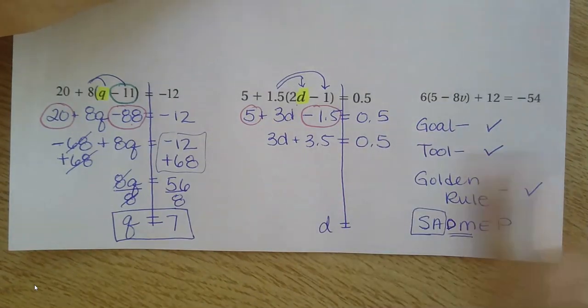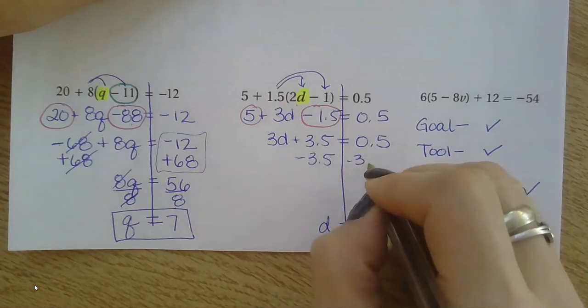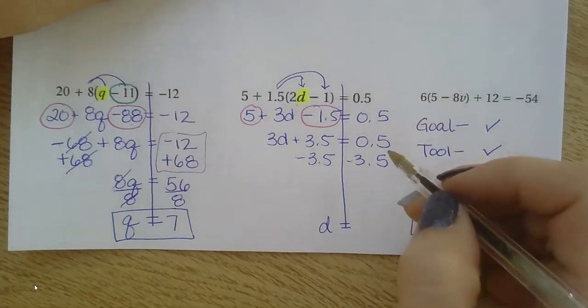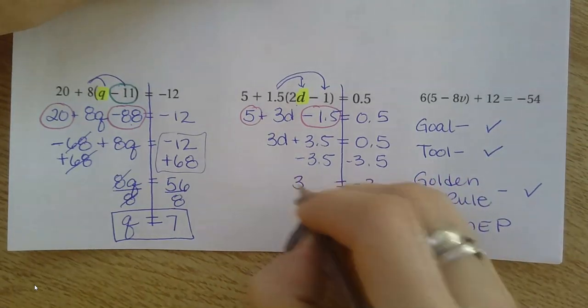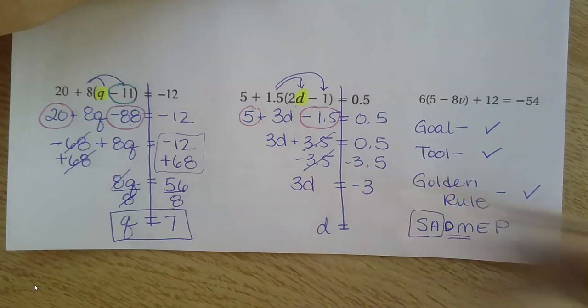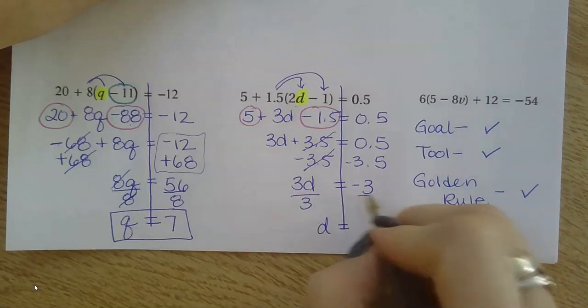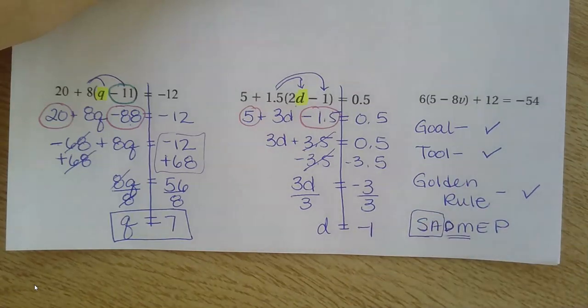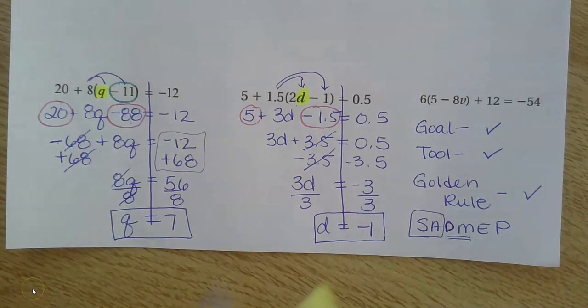And now this is just a normal two-step equation. Cancel out adding and subtracting. Minus 3½ on both sides. Go over and do that if you need to stack them up and do that work. But 1½ minus 3½ is going to give me negative 3. Bring everything down. Remember to cross things out as you cancel them out. And my final step to get rid of multiplying by 3 is going to be divide by 3 on both sides. And I get negative 1.